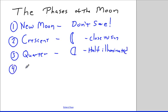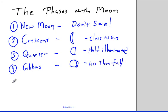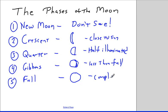Next we have the gibbous phase, which is when more than half of the moon is illuminated — so it's not quite full. There's probably a better picture in your textbook, but it's a little bit less than full. And the full moon is of course the entire moon illuminated — the complete surface of the moon. So these are the different phases of the moon.